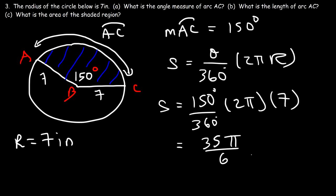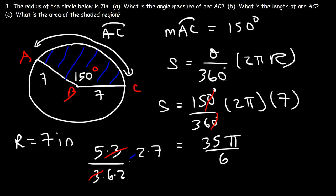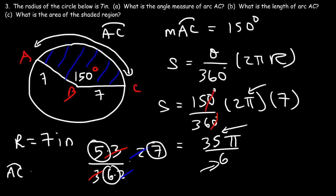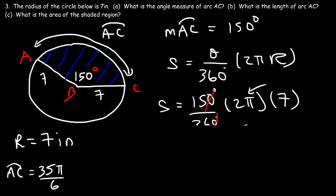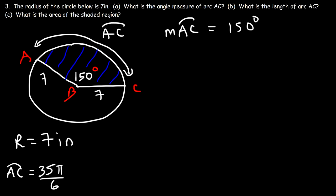To simplify without a calculator: cancel the trailing zero to get 15 over 36; 15 is 5 times 3 and 36 is 3 times 12, which is 6 times 2. We also have 2 and 7 on the outside. Canceling the 3 and the 2 leaves 5 times 7 over 6, which is 35 over 6. Including π, arc AC has length 35π over 6, approximately 18.3 inches.